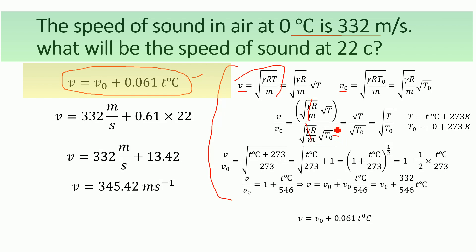The γR/M terms cancel out, leaving us with the square root of T divided by T-naught. Now substituting T as (t degrees centigrade + 273 K) and T-naught as 273 K, we get the square root of (t degrees centigrade + 273) divided by 273. Dividing both terms separately by 273 gives us the square root of (1 plus t degrees centigrade divided by 273).